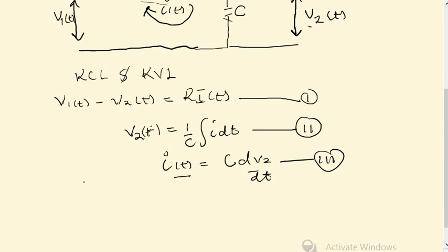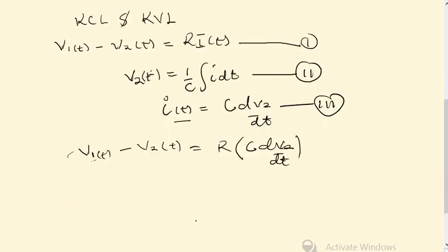We can say V1(t) minus V2(t) is equal to R times, in parentheses, C dV2/dt. By opening the parentheses we can have...